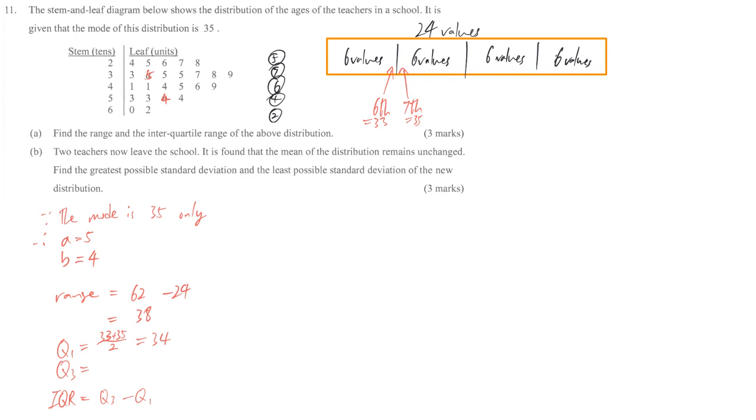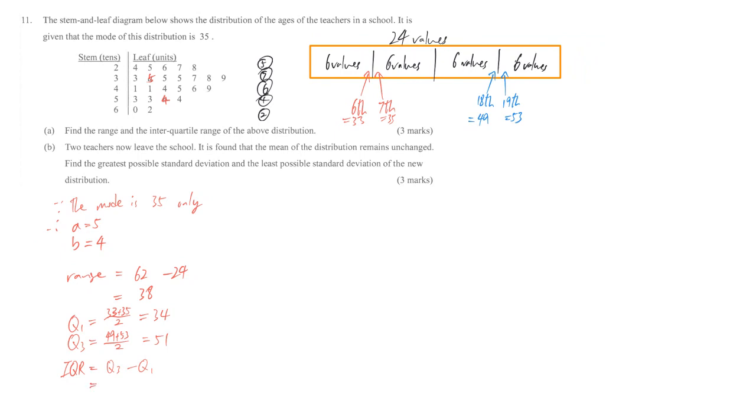Similar reason for Q3 here. This is the 18th data together with the 19th data because there is no value exactly in the middle. The 18th data, we just inversely count here. This is 19th, 53, and the previous one is 49. So 49 and 53, we get the average which is 49 plus 53 divided by 2, which is 51. Therefore IQR equals 51 minus 34, so we get 17.